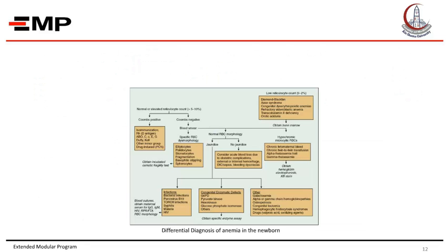If the blood smear shows normal red cell morphology but the patient does not have jaundice, consider acute blood loss due to obstetric complications, external or internal hemorrhage. If the blood smear shows hypochromic microcytic red blood cells, consider chronic feto-maternal bleeding, chronic twin-to-twin transfusion, alpha-thalassemia trait, or gamma-thalassemia. In these cases, obtain hemoglobin electrophoresis and Kleihauer-Betke test.